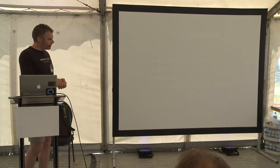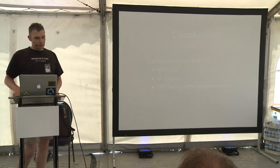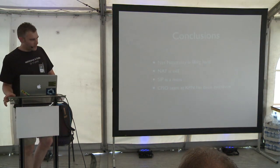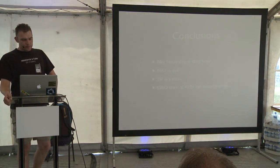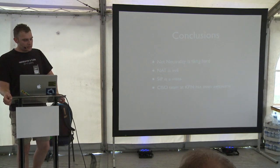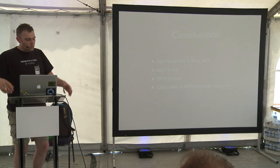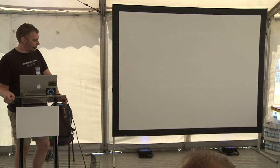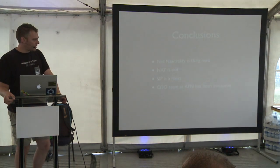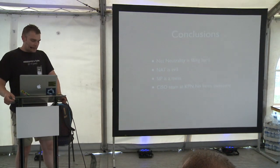So, the conclusions: net neutrality is really hard. It's a hard concept to explain, to explain why it's important, to explain why we need it, to explain what it is. And it's also hard to implement and criticize. This also reaffirms the point that NAT is evil and it really should die. It also says that SIP is a mess. I still don't completely understand why SIP needs to have extra bits added to make it work through NAT.